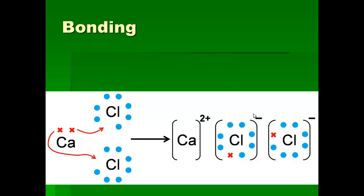Now looking at calcium and chlorine: when an ionic bond is created, calcium has two electrons in its outer shell. If it gets rid of those it will be stable with its octet. Chlorine has seven and wants to gain one, so by calcium donating an electron to each chlorine atom, causing all of them to become ions, it creates an ionic bond.